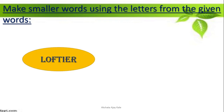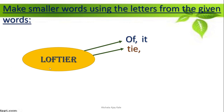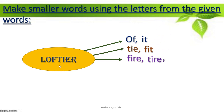Now we will take 'loftier.' We will try to make two-, three-, and four-letter words. Two-letter words: 'of', 'it'. Three-letter words: 'fit', 'lot'. Four-letter words: 'fire', 'tier', 'left', 'rift'.